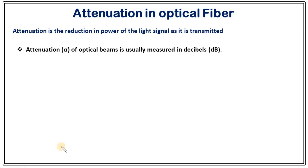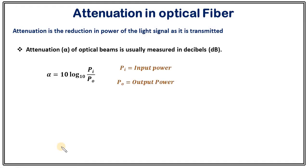Attenuation is measured by the quantity alpha, usually in decibels. Alpha is equals to 10 log base 10 of Pi upon Po, where Pi is the input power and Po is the output power.